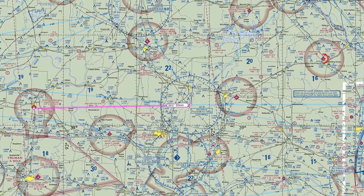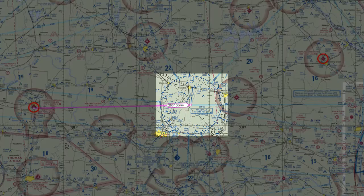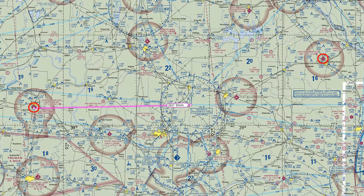I'm going to fly from Bowling Green Airport over to Marshall Memorial Airport using the Hallsville VOR to get me there. For the first leg, I'm going to fly from Bowling Green to the Hallsville VOR.